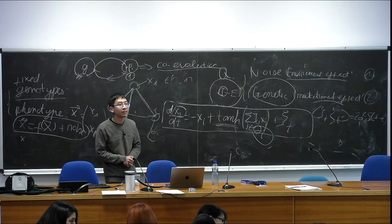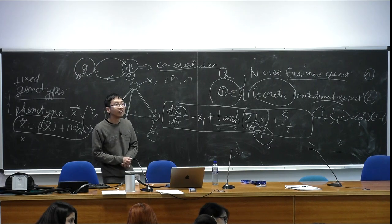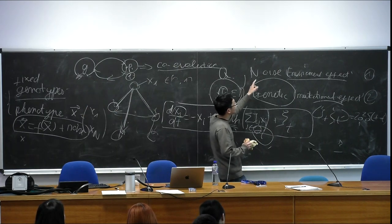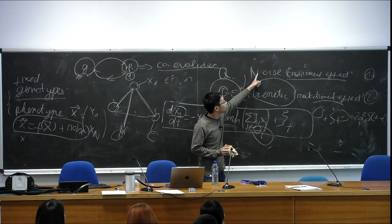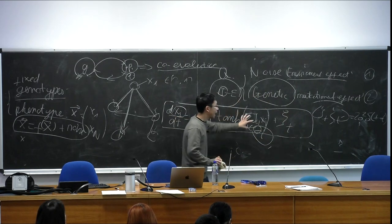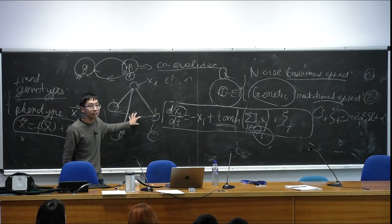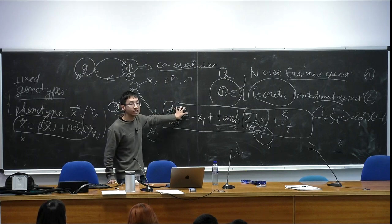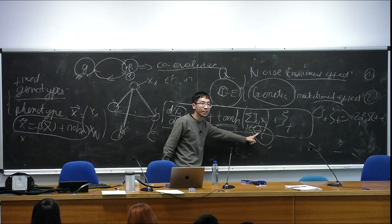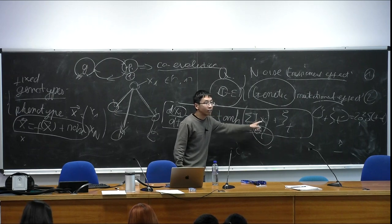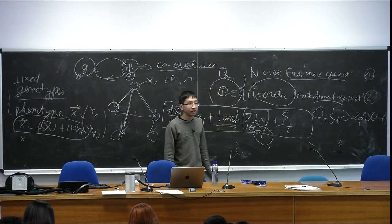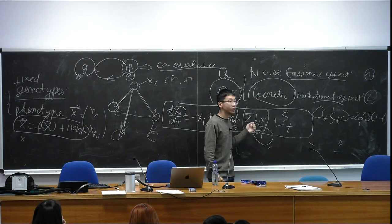Q&A: For those without a background in networks — the hyperbolic tangent and its argument come from two factors affecting the gene dynamics: the noise term (with sigma), and the interaction between the genes in the network. Gene i is not connected to all other genes, only to a subset — the neighbors of i, denoted delta i. All neighbors of i can affect i. This is how you represent the effect of the genetic network structure on the dynamics.